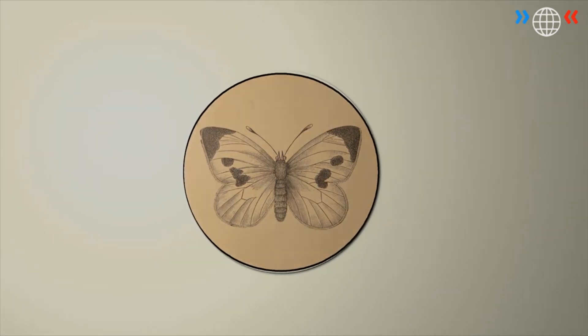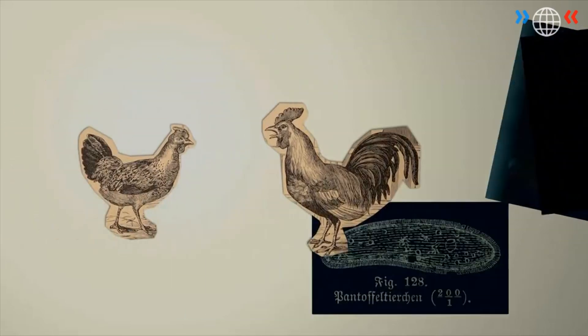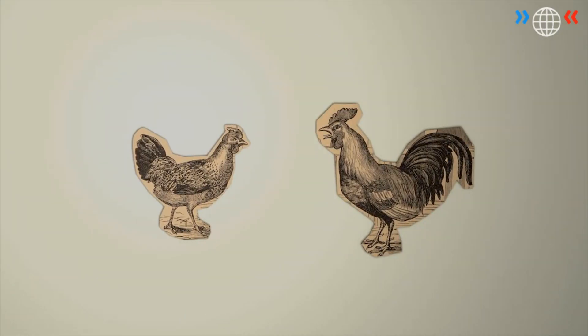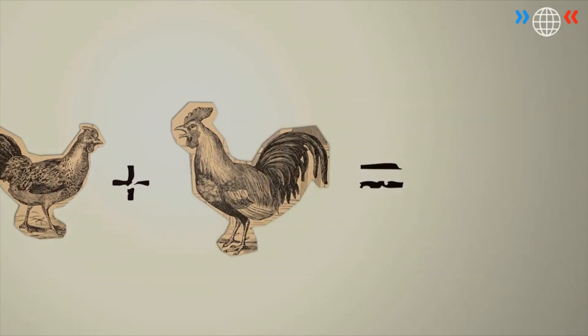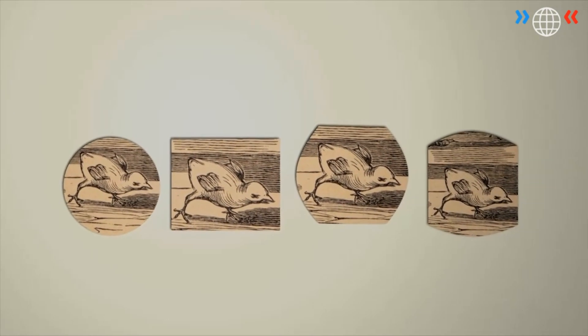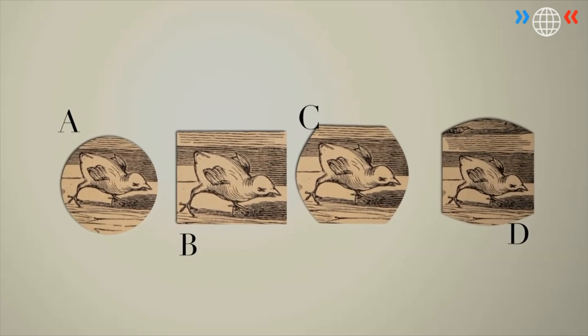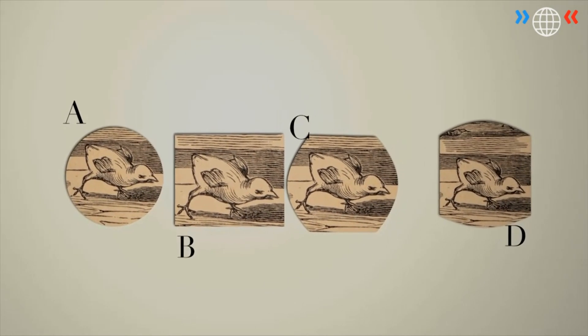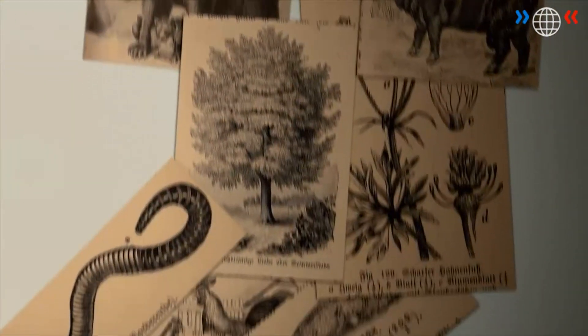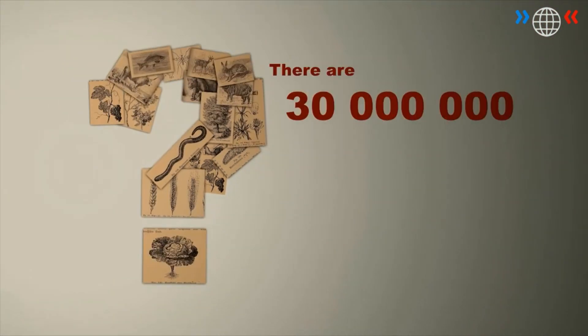A certain plant, animal, insect or microorganism always belongs to a species. Only members of the same species are able to mate and have offspring. They look almost the same and have very similar genes. Actually, we have no idea how many species really exist on Earth. Their number is estimated to be about 30 million.